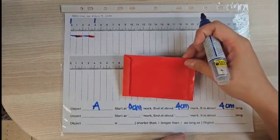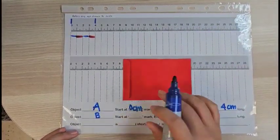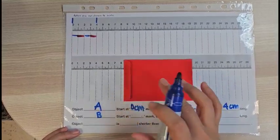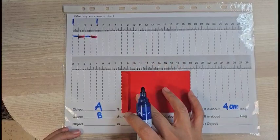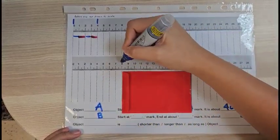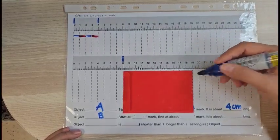Now for the red packet, this is object B. I'm going to choose to start not at the 0 cm, but another number. So let's say I choose to start at the 8 cm mark. Let's look where it ends.